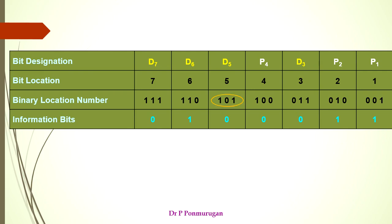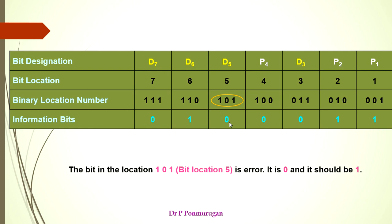The location where the result is 1, 0, 1 corresponds to D5. Here the information bit is 0, which is in error, and it has to be replaced with 1 instead of 0. So the corrected code is 0110011. This is the process of detecting and correcting errors using Hamming code.